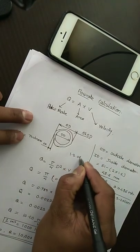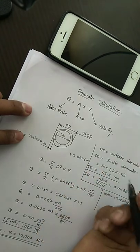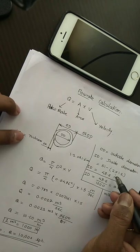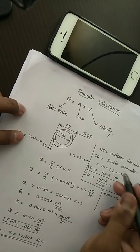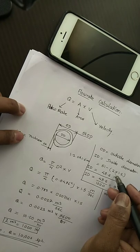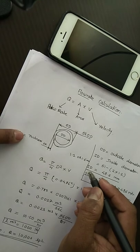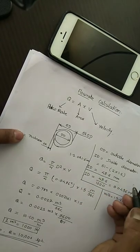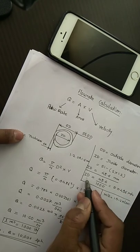When you want to calculate ID, simply subtract the thickness of the pipe on both sides. For 51 OD, you will get ID = 48.6 mm. We will convert it into meters for our calculation, so ID = 48.6 ÷ 1000 = 0.0486 meters.